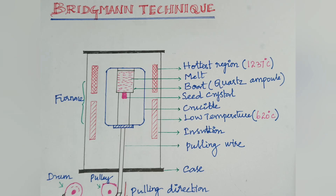Hello everyone. I am going to talk about the same melt growth technique. Two techniques I have already told you: one is the Czochralski method and another one is the Bridgman technique. This is also one type of melt growth.